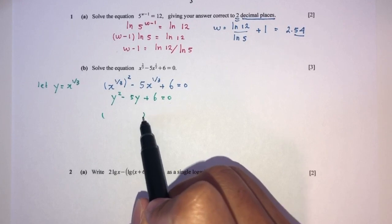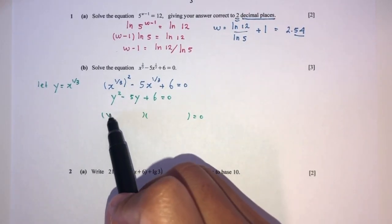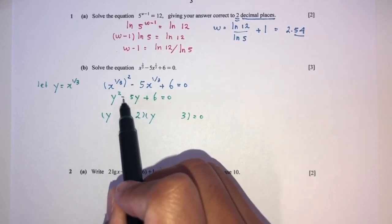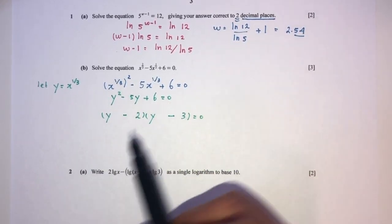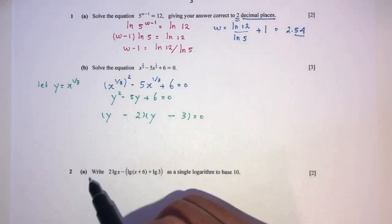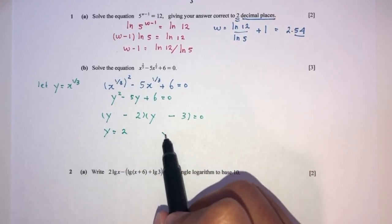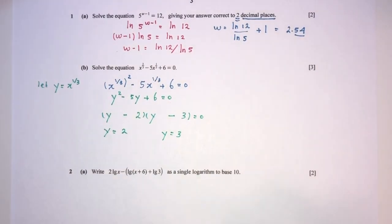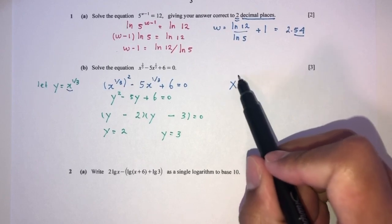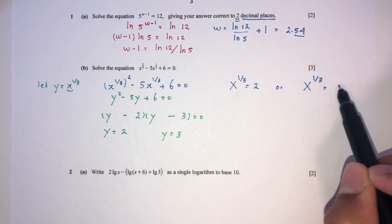We can factorize: y times y, and 6 is 3 times 2. To get minus 5 we need minus 2 and minus 3. Checking: minus times minus is plus, so we have plus 6 — good. This gives y equals 2 and y equals 3. But we're not finding y; we need x. So x to the power 1/3 equals 2, or x to the power 1/3 equals 3.